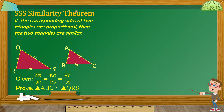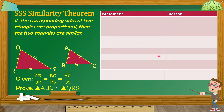This is a Theorem, kailangan pa rin natin i-prove ito — that this statement is true. Given: segment AB over segment QR is equal to BC over RS equals AC over QS. Yan yung mga corresponding sides na proportional — tatlong corresponding sides, they are proportional. We need to prove that triangle ABC is similar to triangle QRS. Bibigay tayo ng mga statements and reasons para mapakita natin na this theorem is true.